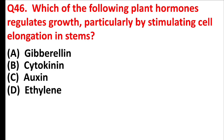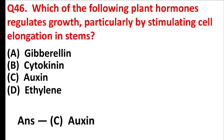Which of the following plant hormones regulates growth, particularly by stimulating cell elongation in stems? Answer is Option C: Auxin.